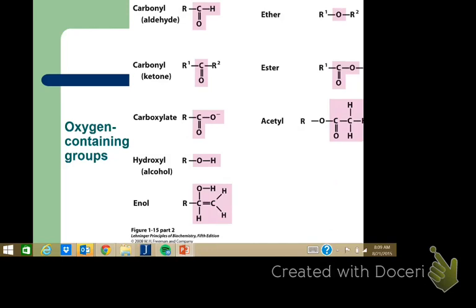A carboxylate is just a carboxylic acid that's lost its hydrogen. In vivo, almost always that hydrogen has popped off, so we say carboxylate. There are some important exceptions involving hydrogen bonding for catalysis, where we'd say carboxylic acid.